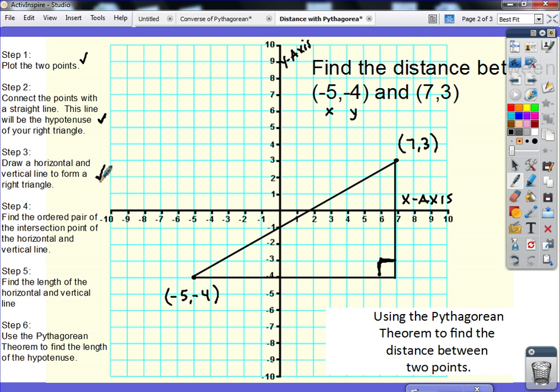Step 4, find the ordered pair of the intersection point of the horizontal and vertical line. In other words, I want to know, where is this point located? Well, since this point up here, I had to move 7 to the right to get to this point, and I dropped this straight down so that I had a vertical line, my x-coordinate here is going to be 7.